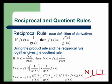Using the product rule and the reciprocal rule together gives us the quotient rule. If h of x is f of x over g of x, then we can write h of x is f times 1 over g of x. And so the derivative of h of x is the first, f of x, times the derivative of the second, 1 over g of x prime, plus the second, 1 over g of x, times the derivative of the first, f prime of x.